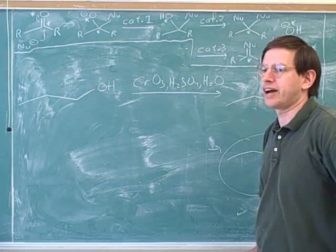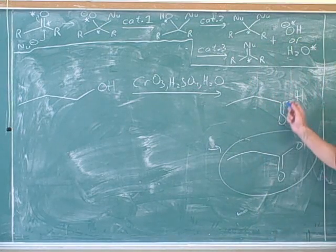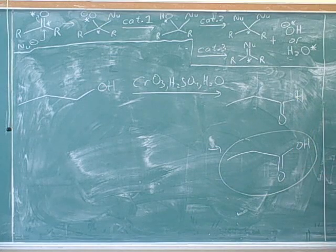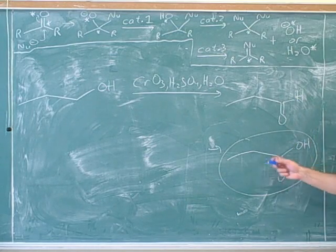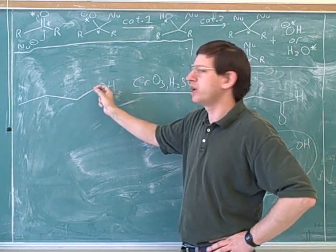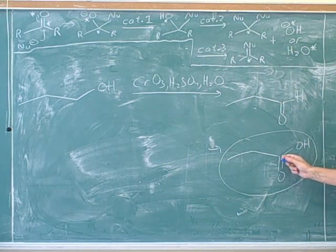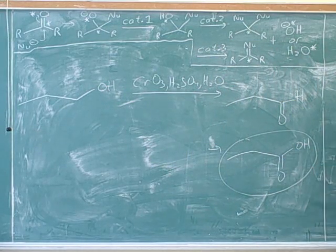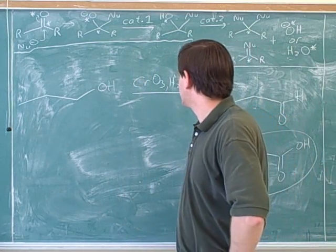Now, last semester, we called this over-oxidation because we usually didn't want this to happen. Usually, last semester, we were trying to make aldehydes and ketones, but now maybe we want to make a carboxylic acid. So maybe we shouldn't call it over-oxidation. It just means that this is oxidized twice. You can see it oxidized twice because here, we started with only one bond to oxygen. Here, we have two bonds to oxygen, and now we have three bonds to oxygen. So there's been two oxidations. All right, so we've seen these oxidations here.